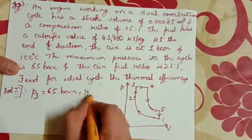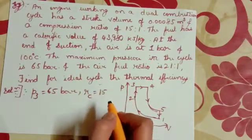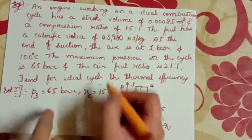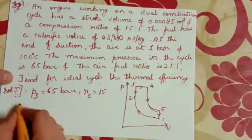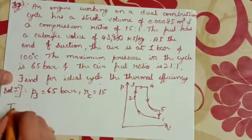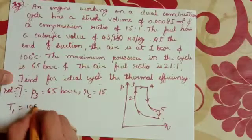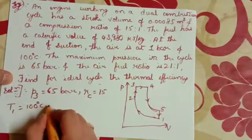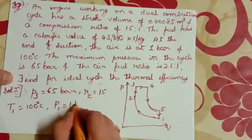RC is 15, that is compression ratio. Temperature T1 is equal to 100 degree Celsius. P1 is equal to 1 bar.